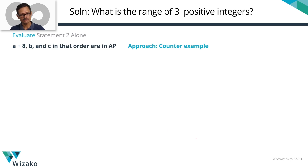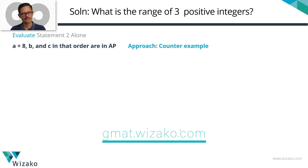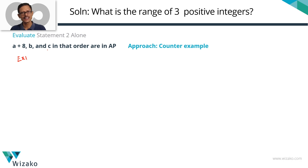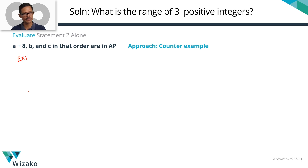Let's evaluate statement 2 alone. It says A+8, B, and C are in that order in an arithmetic progression. The approach I'm going to take is a counter-example: I'll pick one example where this condition is satisfied and find one range, then try to get a different range value. If I get more than one value, the statement is not sufficient. Let's see if that's possible.